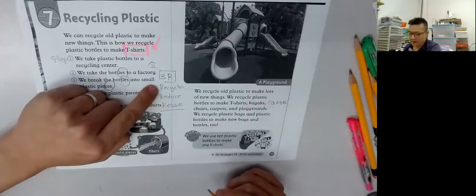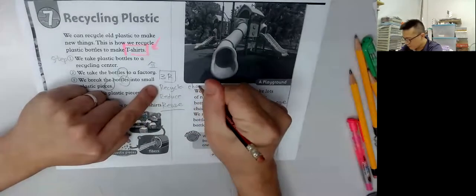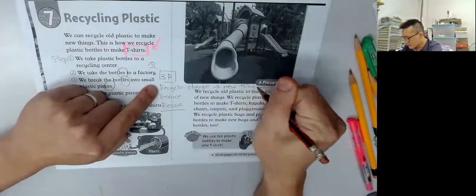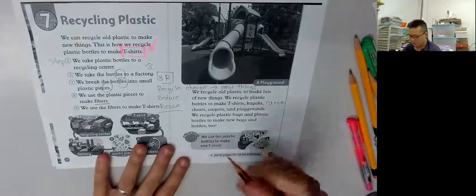改變它的形態,是change了它. 做一個new thing出來. New things出來. 就叫做recycle.